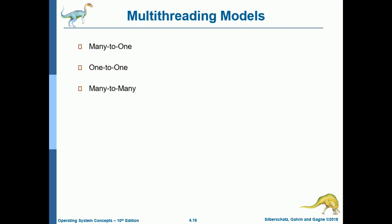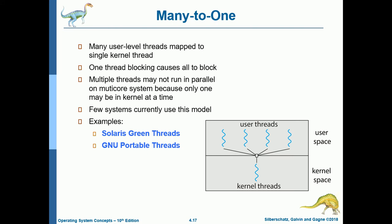The multi-threading models between user threads and kernel threads are: many-to-one, one-to-one, and many-to-many. In many-to-one, many user-level threads map to a single kernel thread. One thread blocking causes all to block, and multiple threads may not run in parallel on a multi-core system because only one may be in the kernel at a time. Few systems use this model — examples are Solaris Green Threads and GNU Portable Threads.